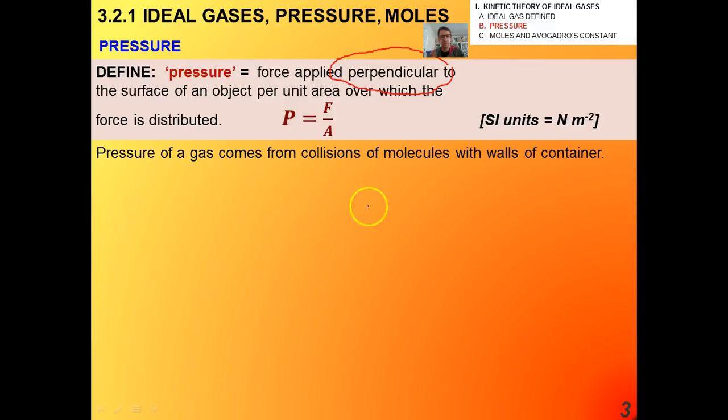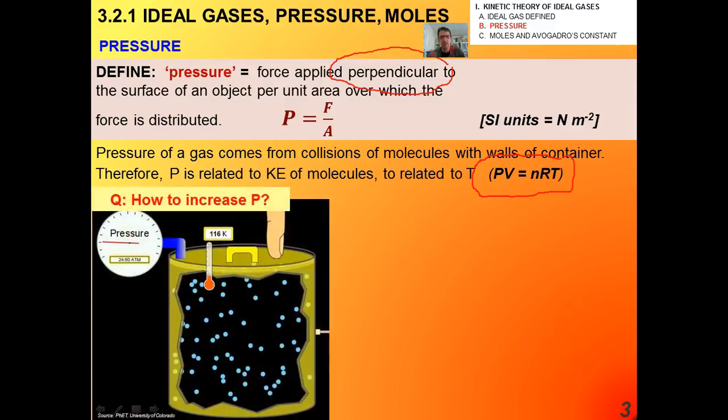Now, in the case of a gas, the pressure comes from collisions of molecules with the walls of the container. So now P is related to the kinetic energy of the molecules, which is also related to T, right? And it turns out that PV equals NRT. This is the ideal gas law, which we're going to talk about more formally in a little bit.